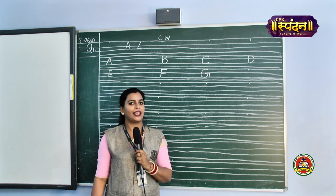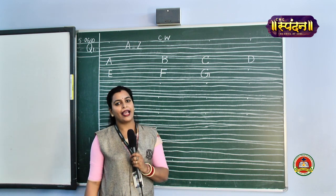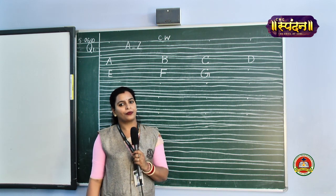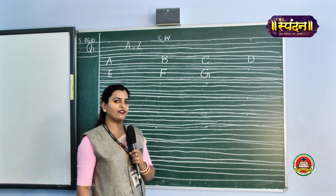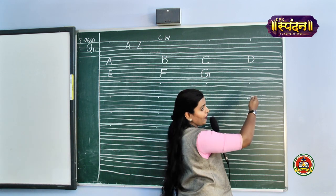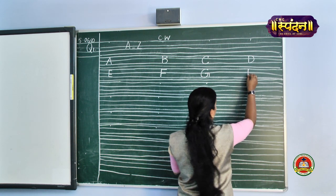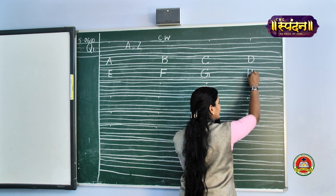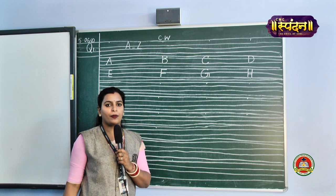That is alphabet H. H stands for hen, H stands for hat, H stands for home. There are many things with alphabet H. Come on, let us write alphabet H. It is very easy. Just below alphabet D, put a standing line and a sleeping line in between, and then again a standing line starting from the pink line to the second black line. This is alphabet H.